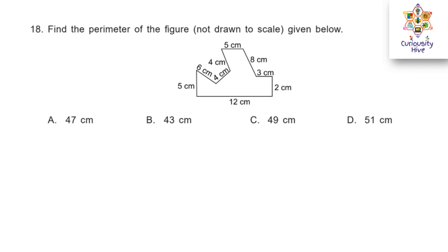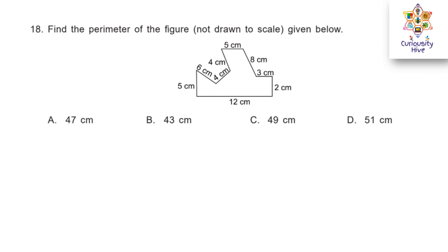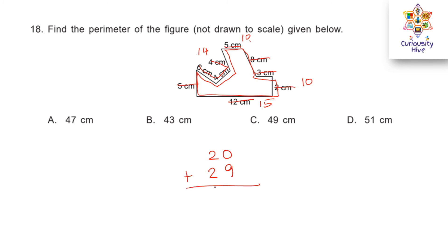Question 18: find the perimeter of the figure not drawn to scale. We just need to add all the boundary measurements. 6 plus 4 is 10, plus 4 is 14. Then 5 plus 5 is 10, 8 plus 2 is 10, and 12 plus 3 is 15. 10 plus 10 is 20, and 15 plus 14 is 29. So 20 plus 29 is 49 centimeters, which is option C.